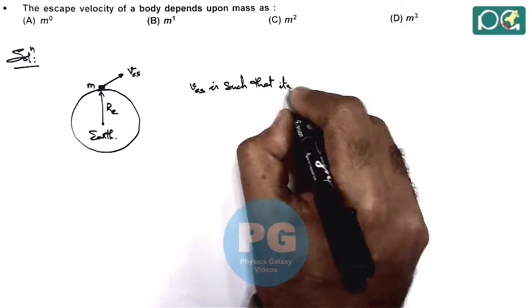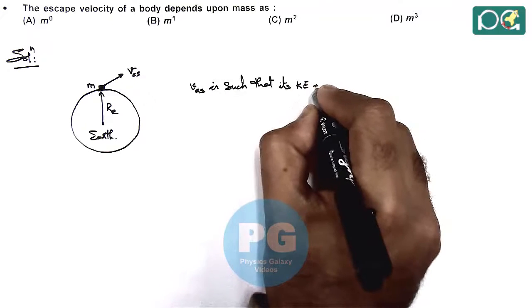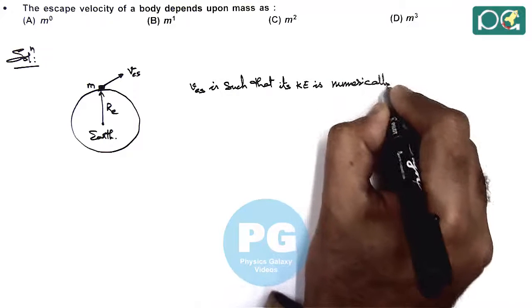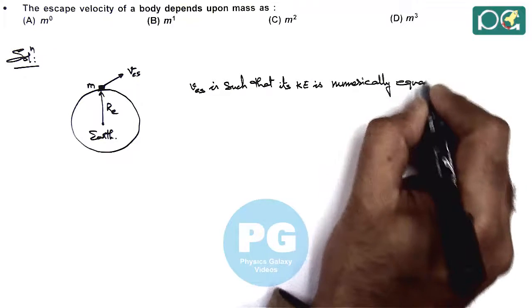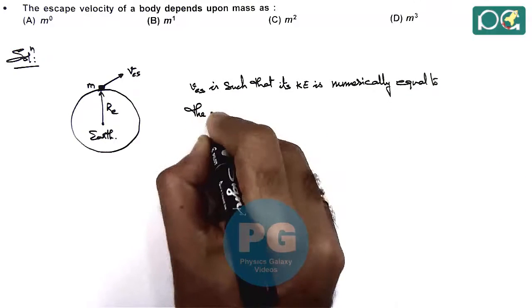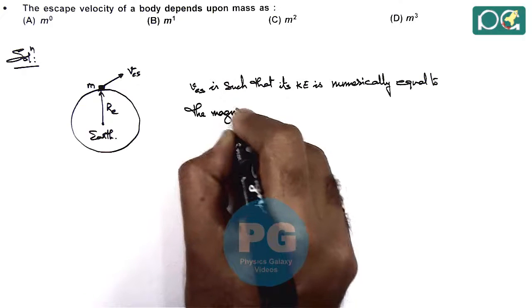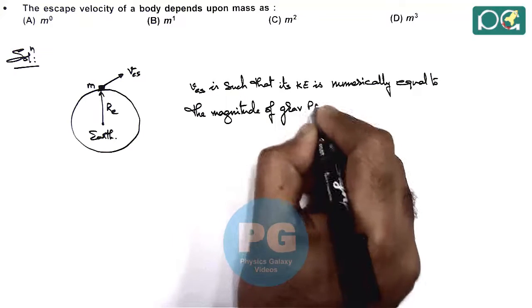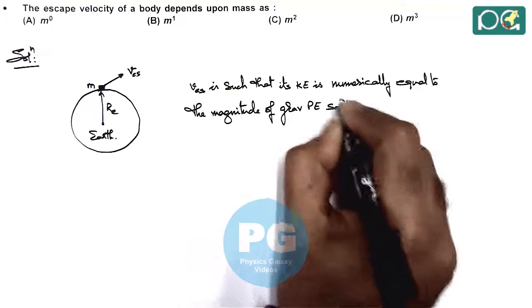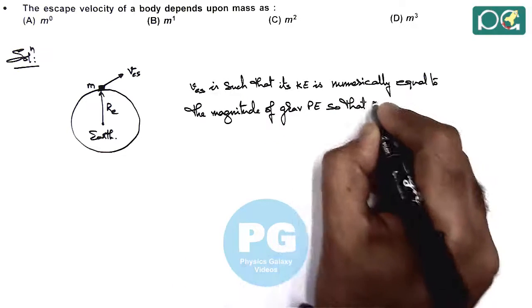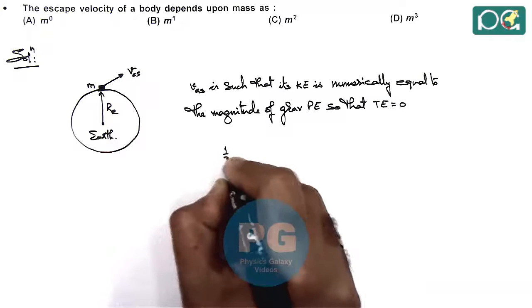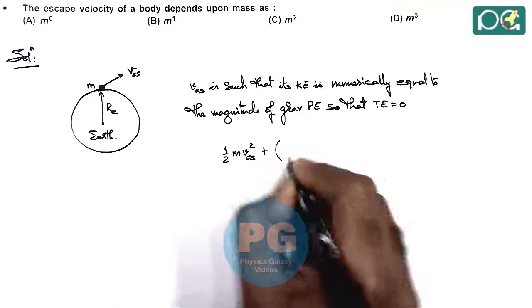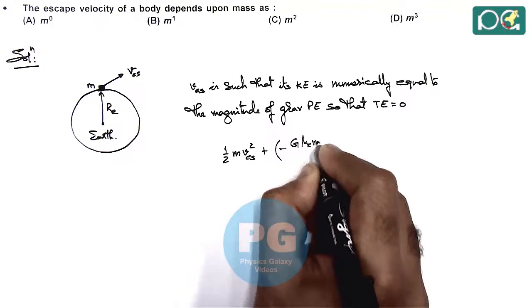Its kinetic energy is numerically equal to the magnitude of gravitational potential energy so that total energy becomes zero. It is 1/2 m v_escape^2 plus the potential energy minus GMEm/RE. This should equal zero.